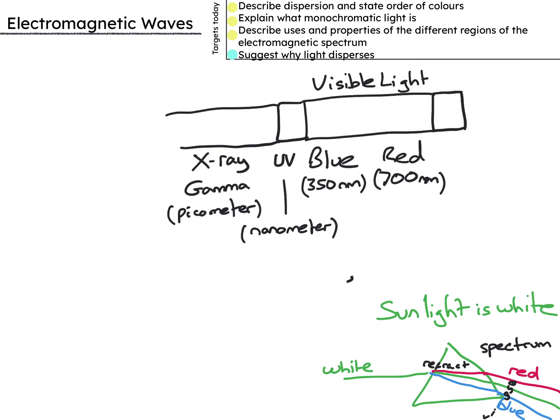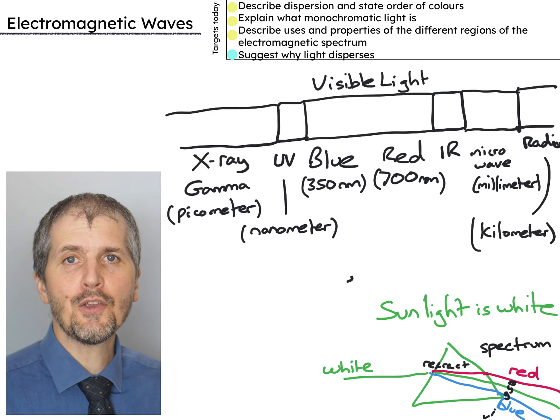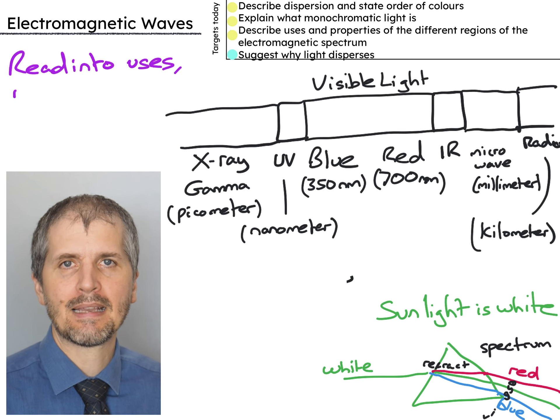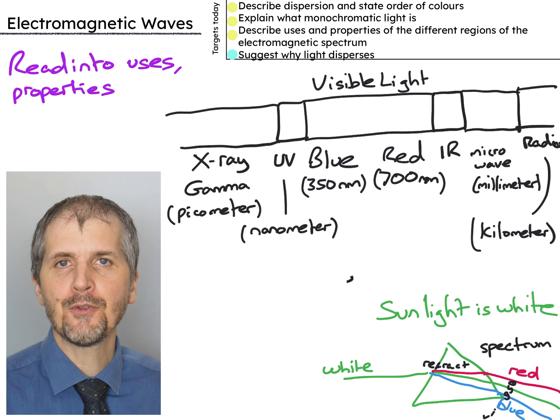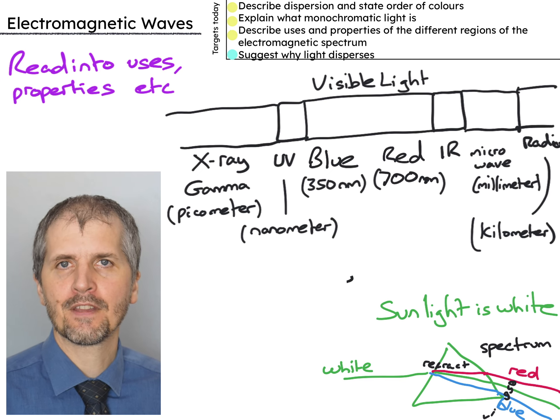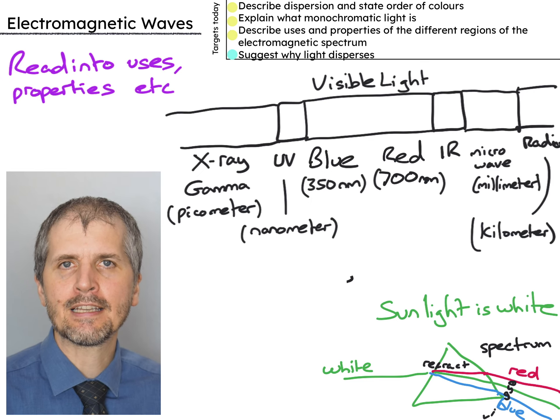Going the opposite way from red we get infrared then microwaves with millimeter wavelengths and radio waves with kilometer wavelengths. I'm going to let you look into the other details including all the regions of the electromagnetic spectrum with their uses and properties including visible light and the order of the colors. There's quite a lot of factual information that you need to remember here.